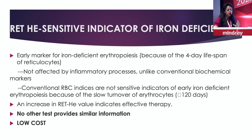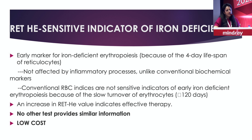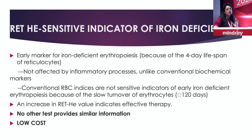Reticulocyte hemoglobin is an amazing parameter for iron deficiency — it can be pure iron deficiency or functional iron deficiency that happens in patients with anemia of chronic disease. It clearly reflects the true status of iron availability to the cells.